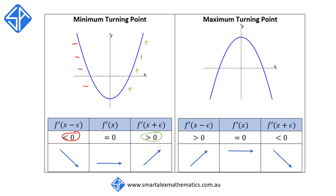For a maximum turning point, the opposite is true. On the left-hand side of the stationary point, the function is increasing, and on the right-hand side, the function is decreasing. So on the left, the value of f'(x) is going to be positive, and on the right, the value of f'(x) is going to be negative.